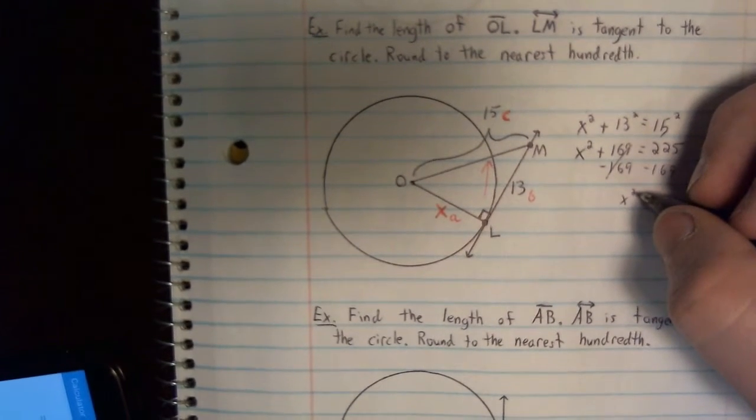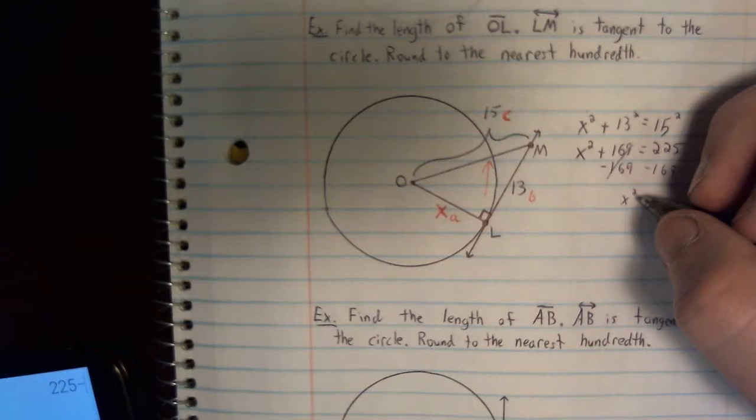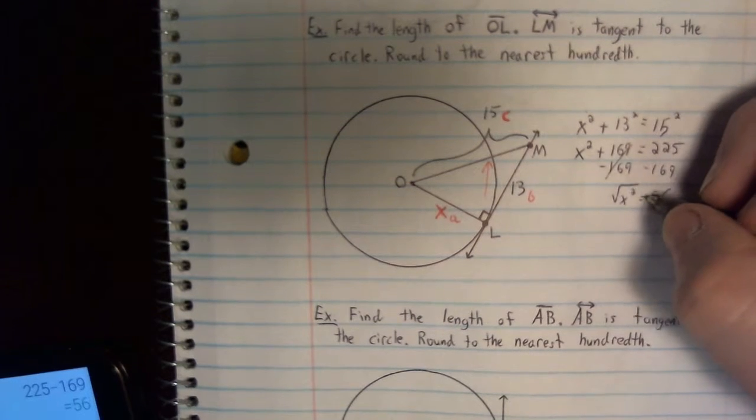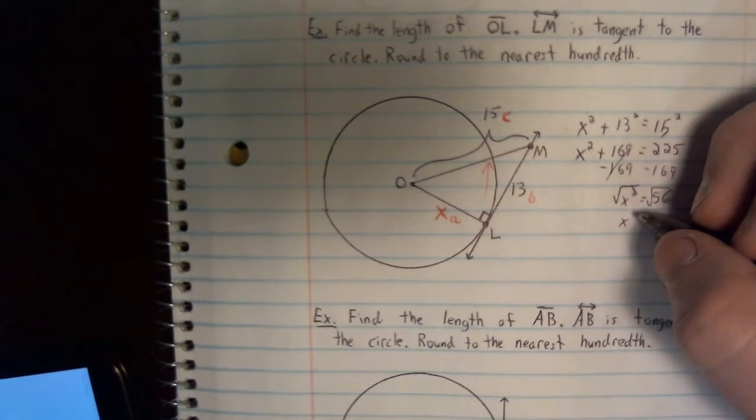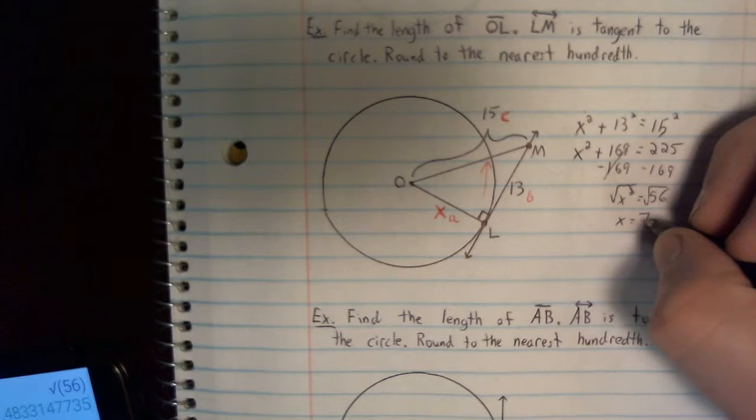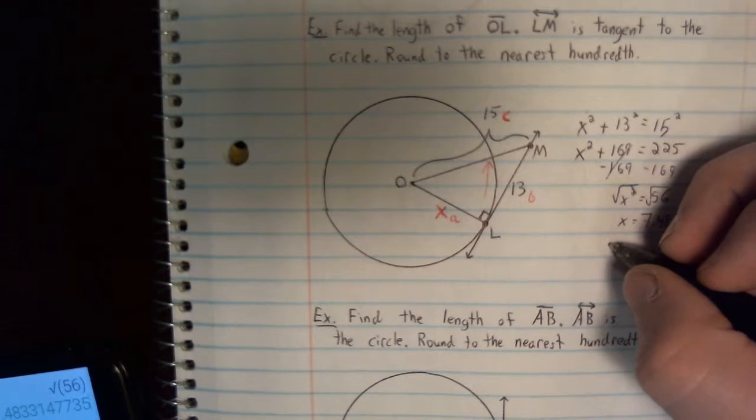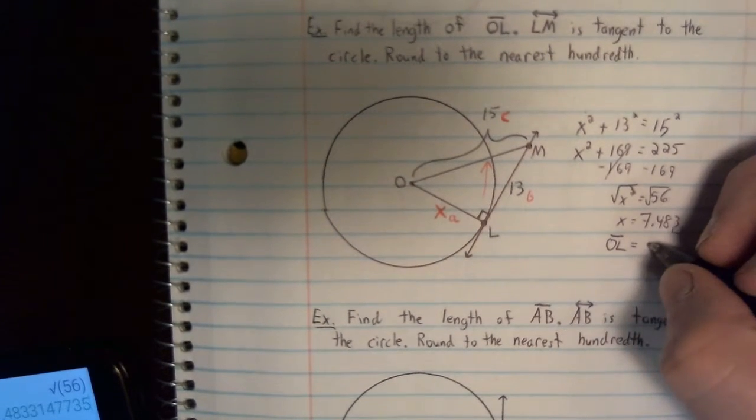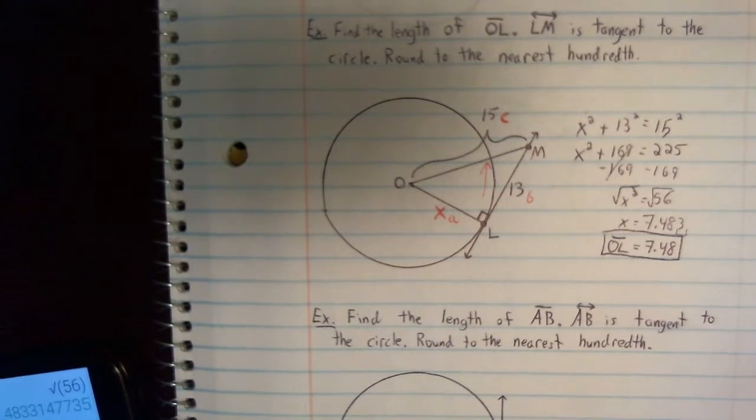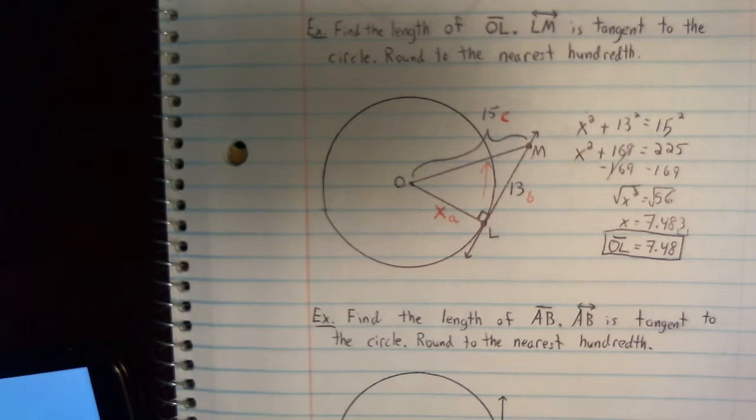So you've got, let's see, 225 minus 169 is 56. Take the square root. That gives us 7.4833. Again, this 3 tells the 8 to stay the same. So here we were looking for line segment OL. It's going to be 7.48. How'd you do with that one? Hopefully you got the correct answer.